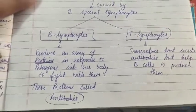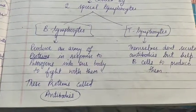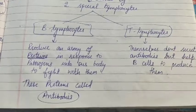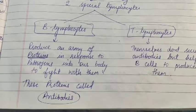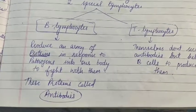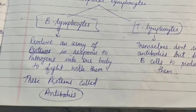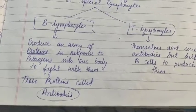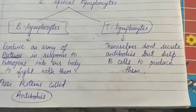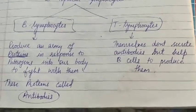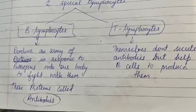In acquired immunity, our body has two types of responses to fight pathogens: a primary response and a secondary response. The secondary response is due to memory and is a fast response to the same pathogen re-entering the body. Both responses are possible because our body has two types of lymphocytes — B lymphocytes, which release antibodies to fight pathogens, and T lymphocytes, which help B cells make antibodies.